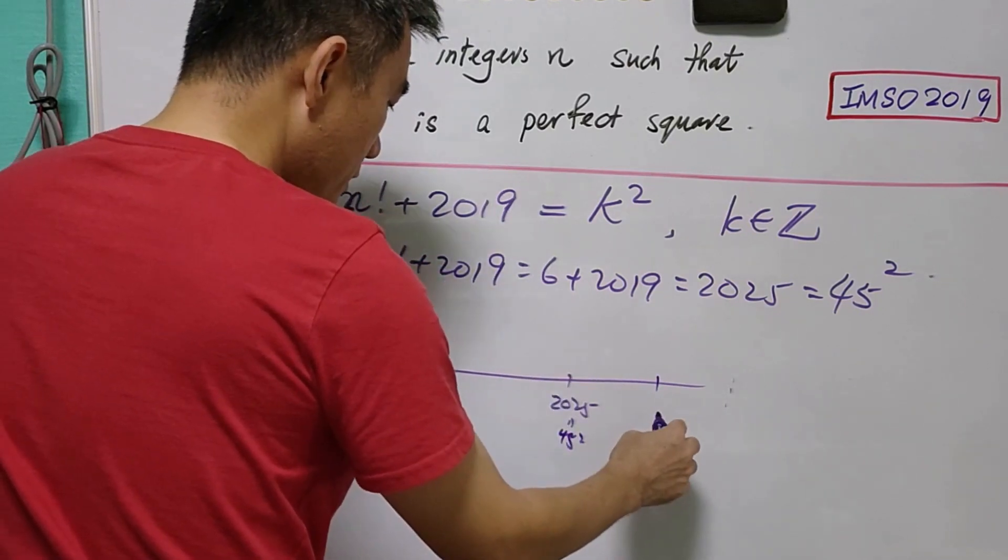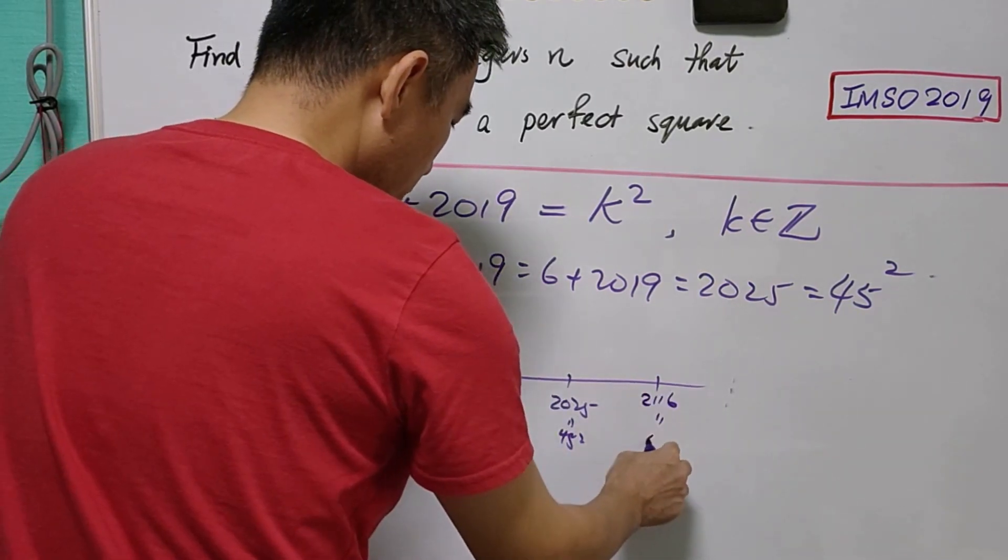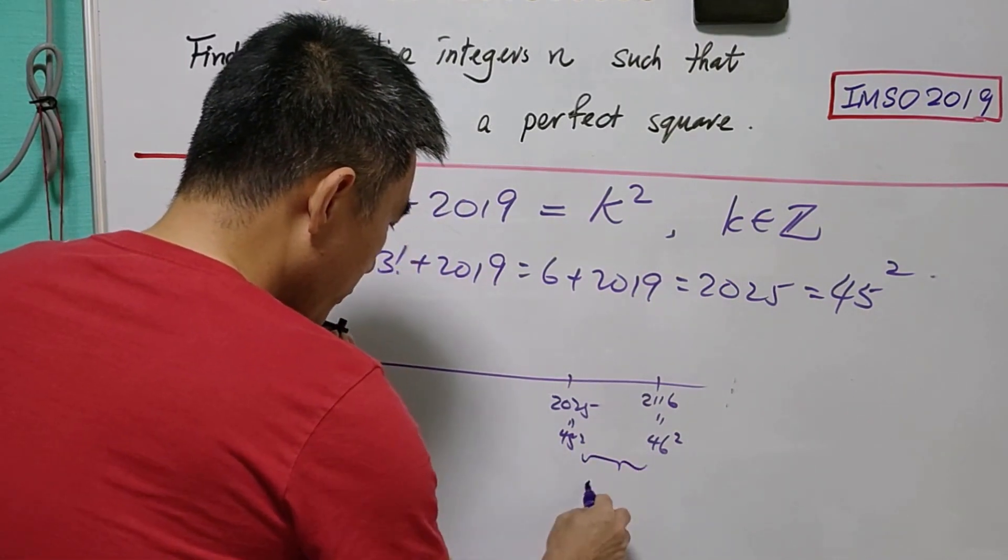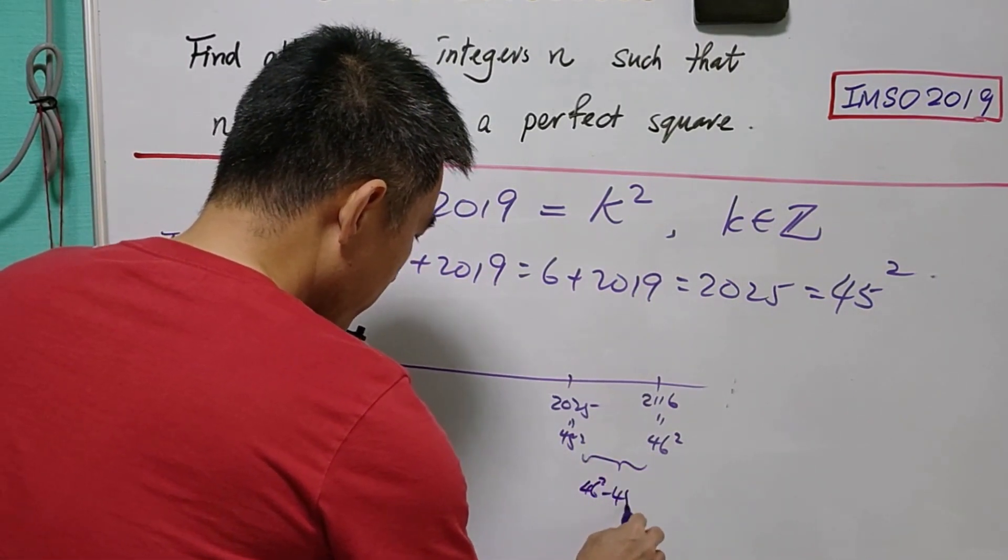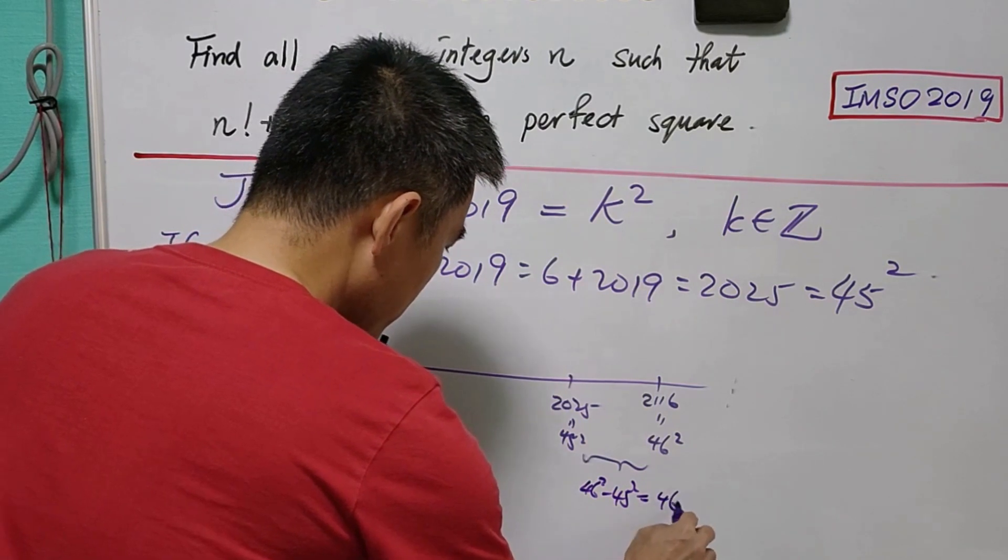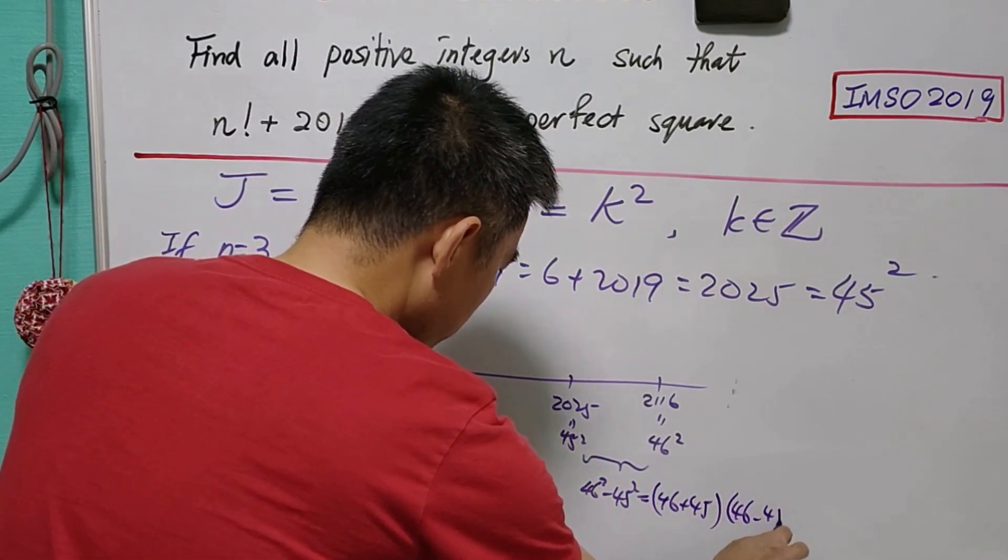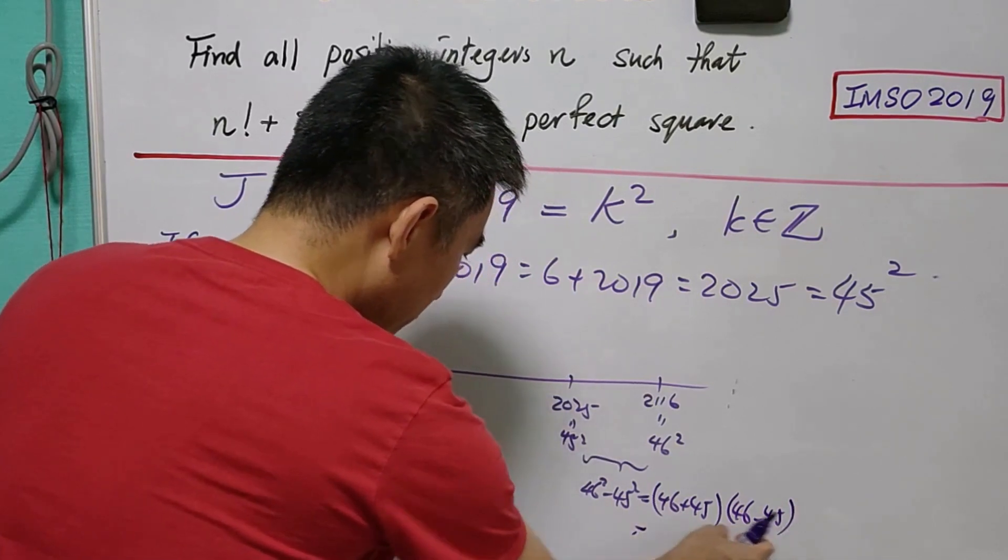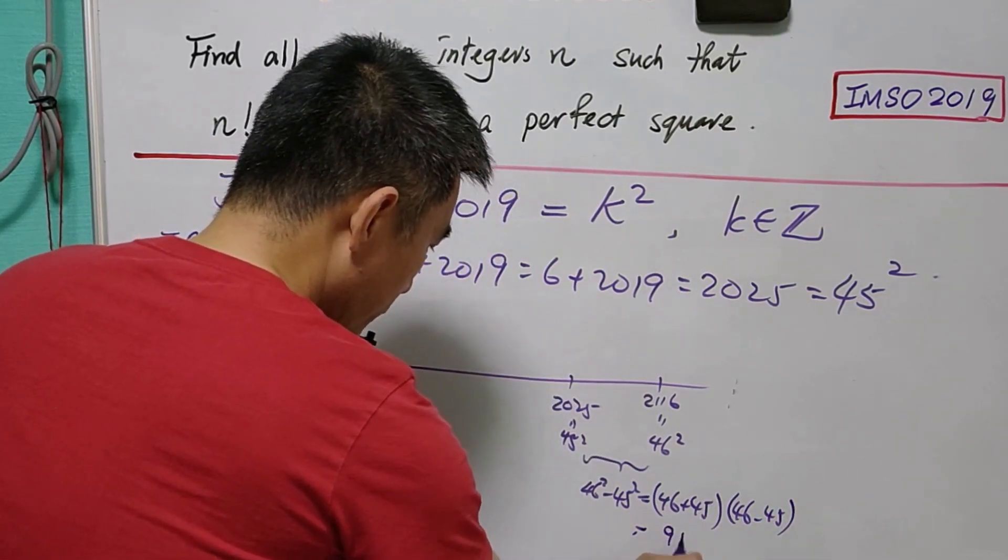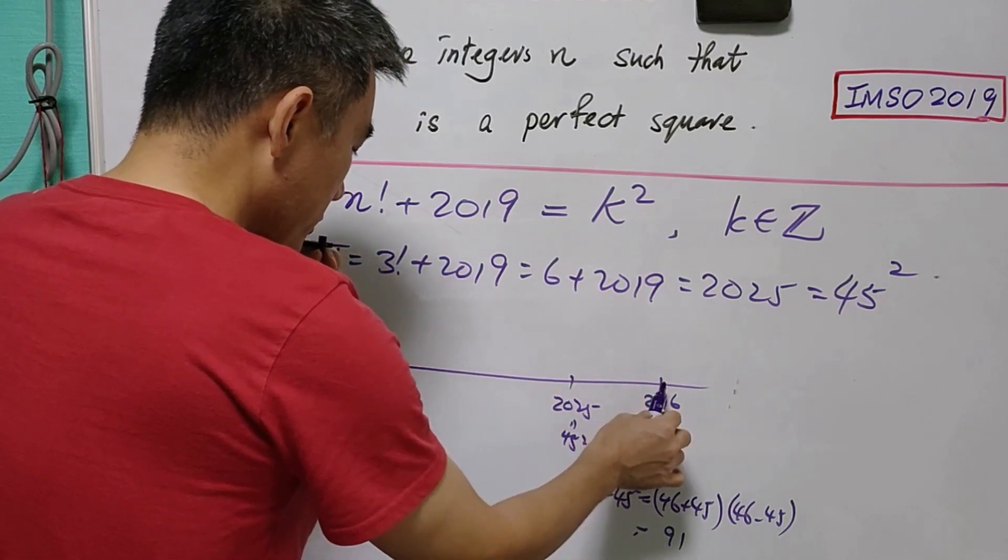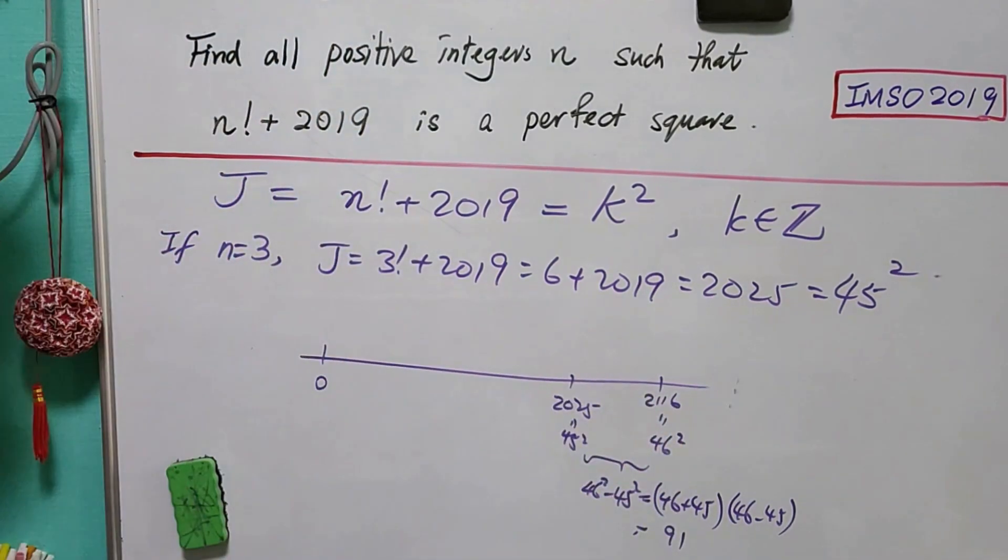Then the next perfect square is 2116, which is 46². The distance between these two is 46² - 45² = (46 + 45)(46 - 45) = 91. Any number in between 45² and 46² cannot be a perfect square.